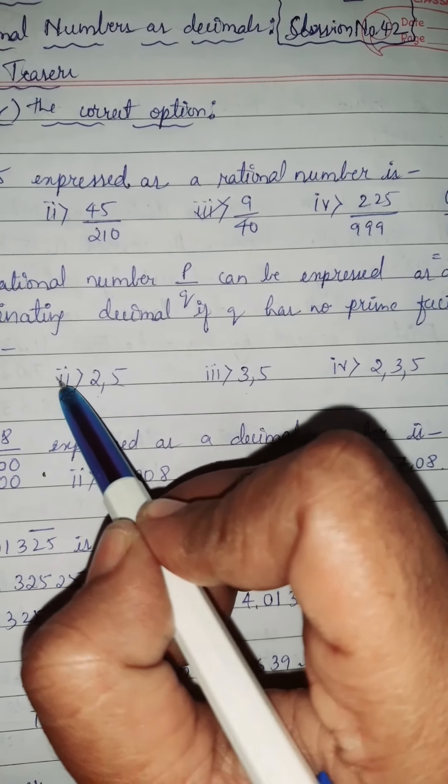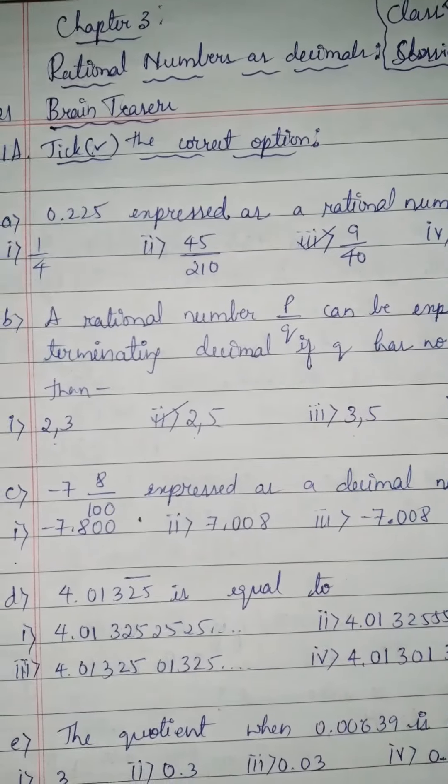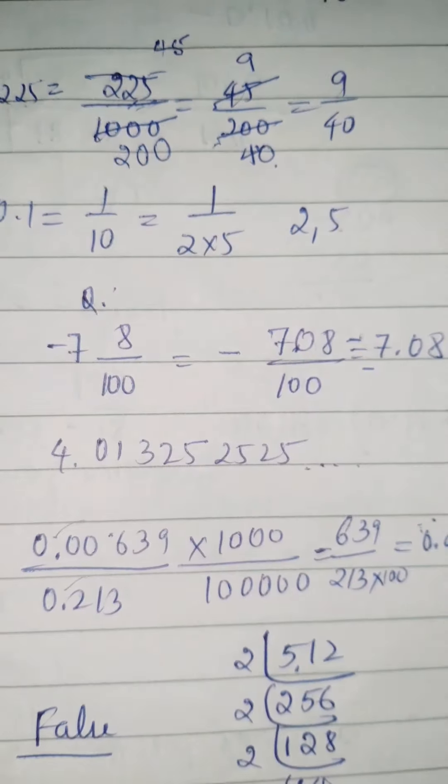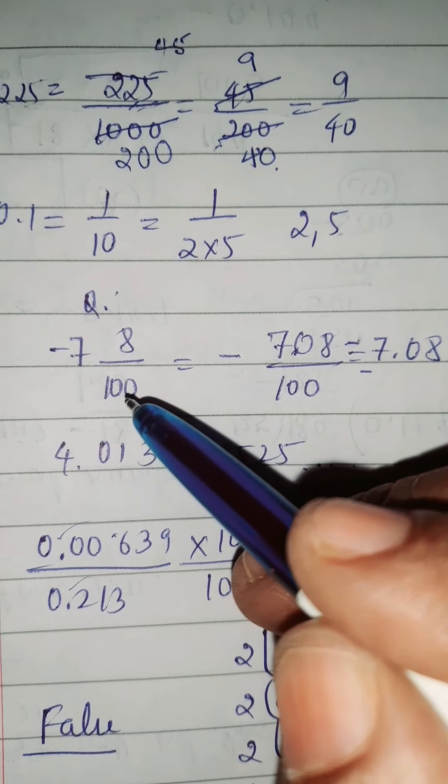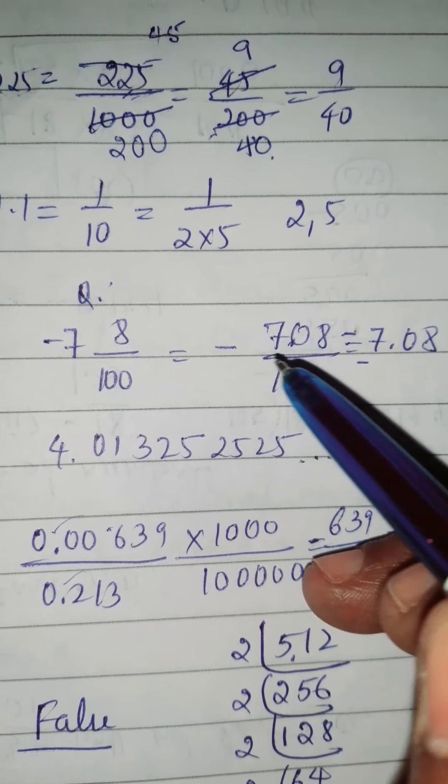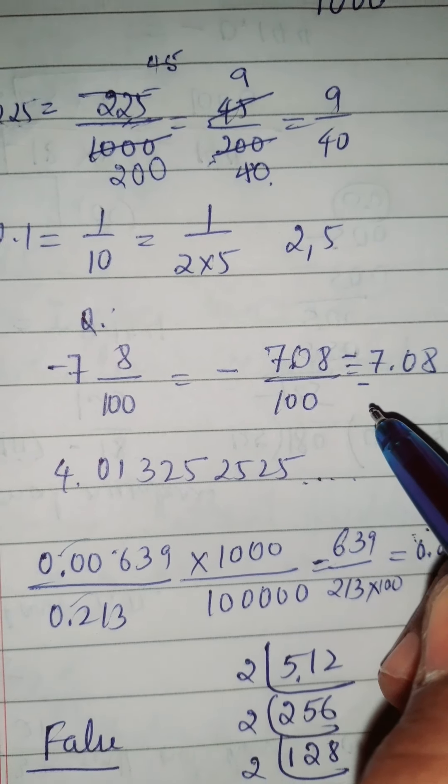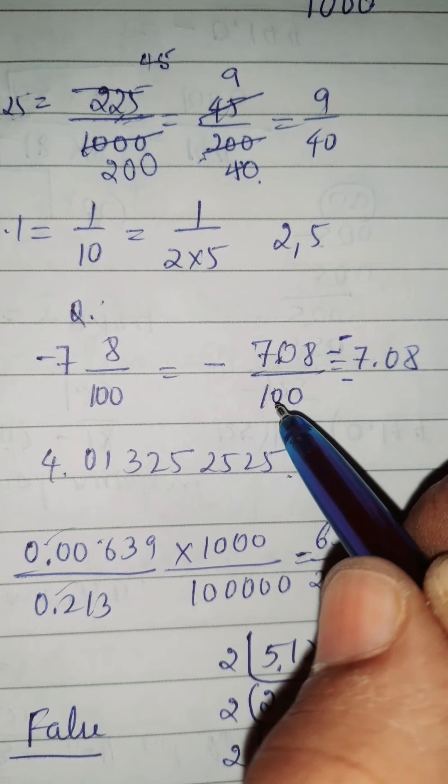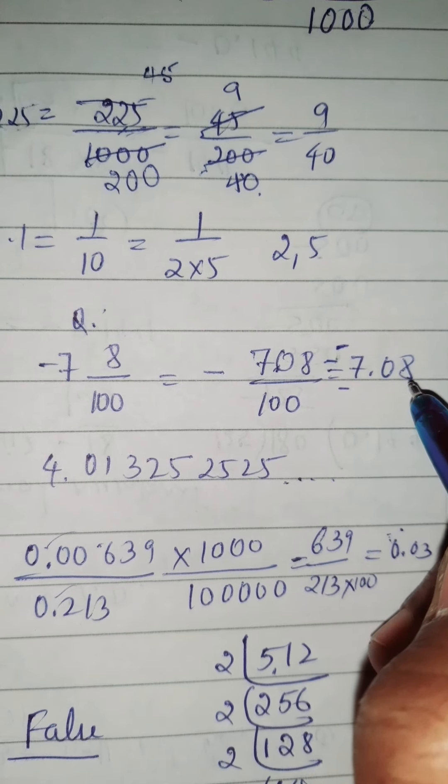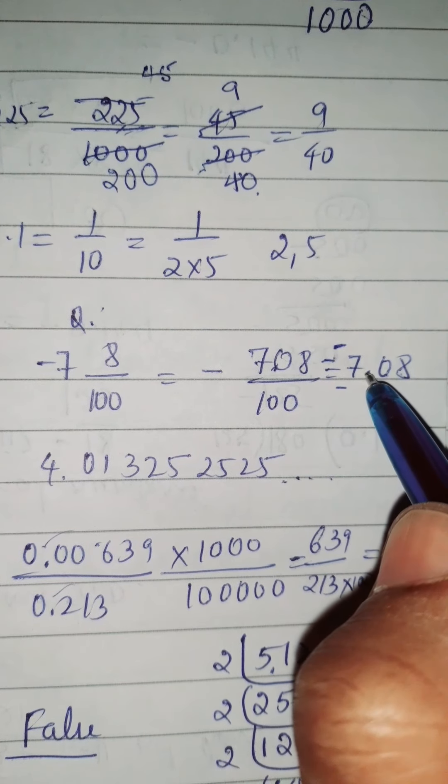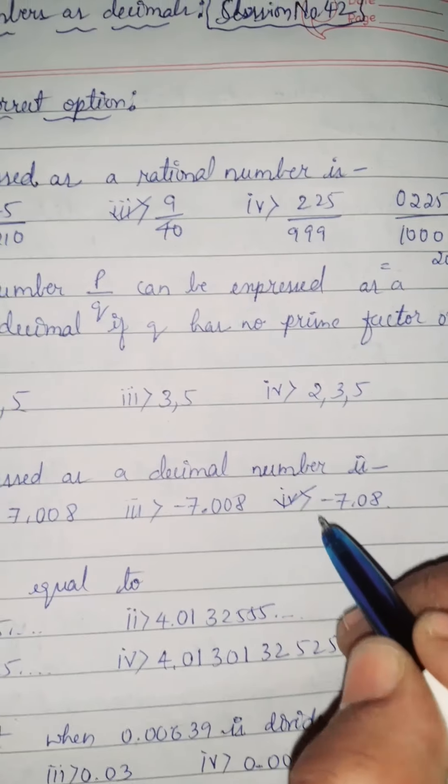Question number C. Minus 7, 8 by 100 expressed as a decimal number is. Here is minus 7, 8 by 100. We have to convert this mixed number into improper rational number. 10 times 7 is 700, 700 plus 8 is 708 divided by 100, negative sign as it is. Now 708 divided by 100 is equal to minus 7.08. The answer is fourth one, minus 7.08.